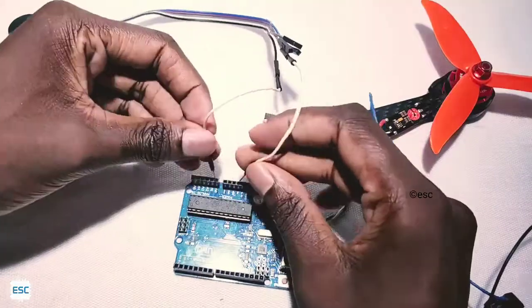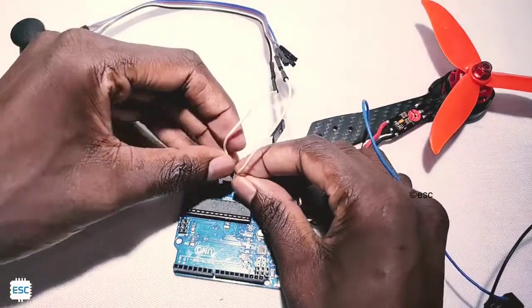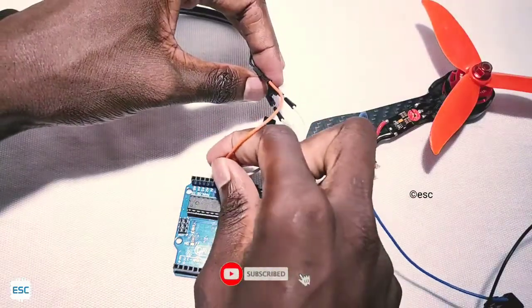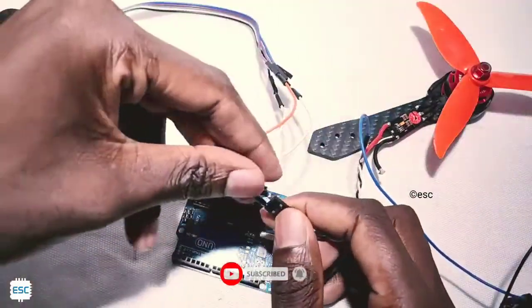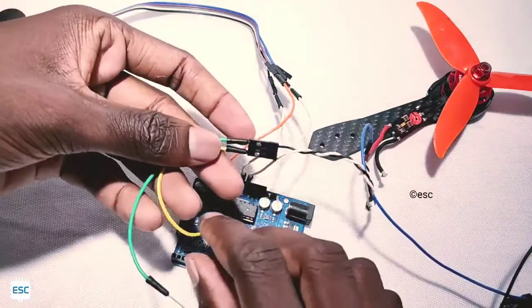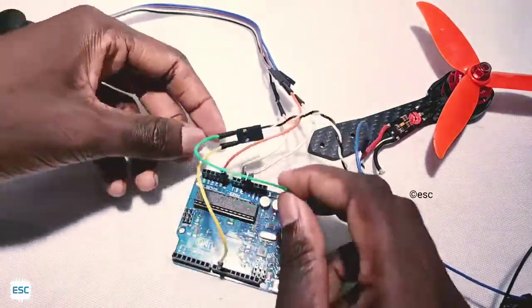Connect joystick to Arduino. That is VCC to 5 volt and ground to ground. Output of the joystick to analog pin of the Arduino. The input of the ESC connect to digital pin 9 of Arduino. You can use any digital pin. That's it.